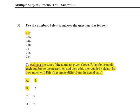It says to estimate the sum of the numbers given above, Riley first rounds each number to the nearest 10, and then adds the rounded values. By how much will Riley's estimate differ from the actual sum?